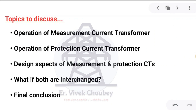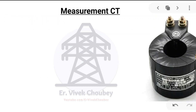Today in this video, these are the five points we are going to discuss. First, the operation of the measurement current transformer, then the operation of the protection current transformer. We will briefly see both of them, then we will see the design aspects of the measurement and protection CTs. It is important to understand how they are designed so that they cannot be used interchangeably. Then I will cover what happens if we interchange both of them, and finally I will conclude this video.